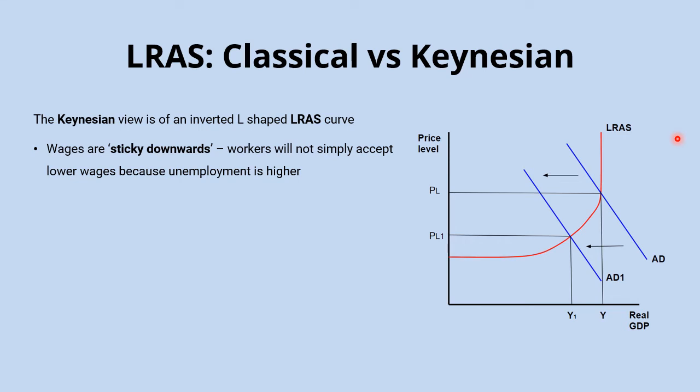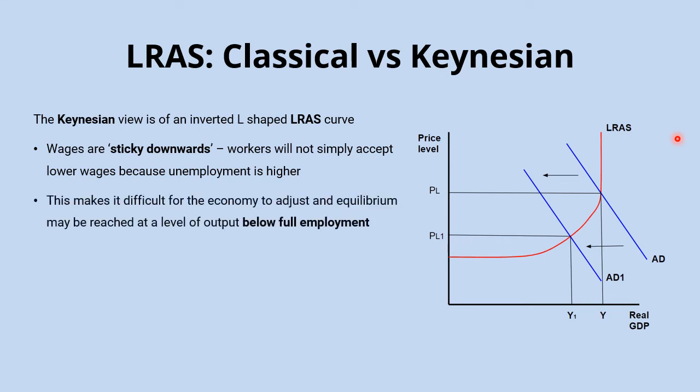Under the Keynesian model, aggregate demand falls and the economy can settle in equilibrium even in the long run at a lower level of real GDP than the full employment level of output. On our diagram, this is the full employment level of output, and the economy has come to settle at equilibrium at a lower level of output than that.